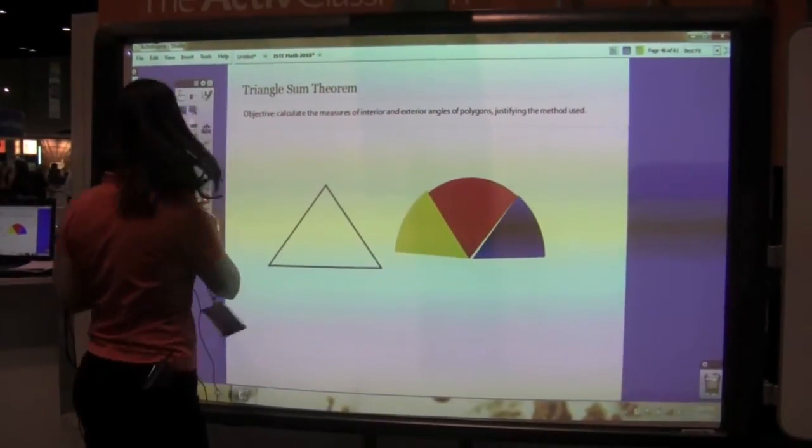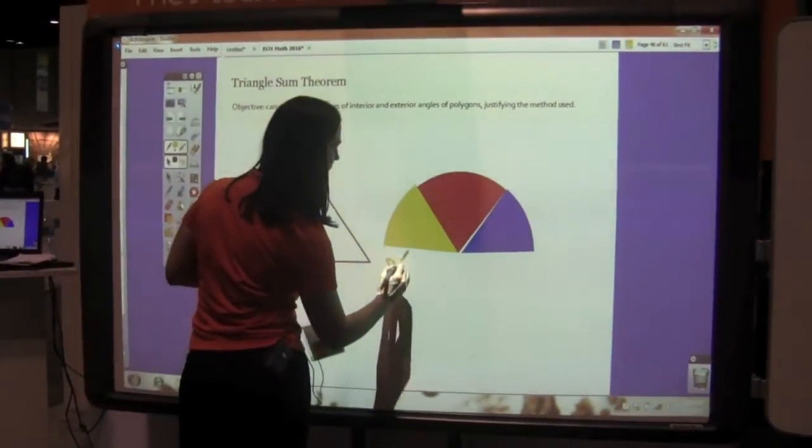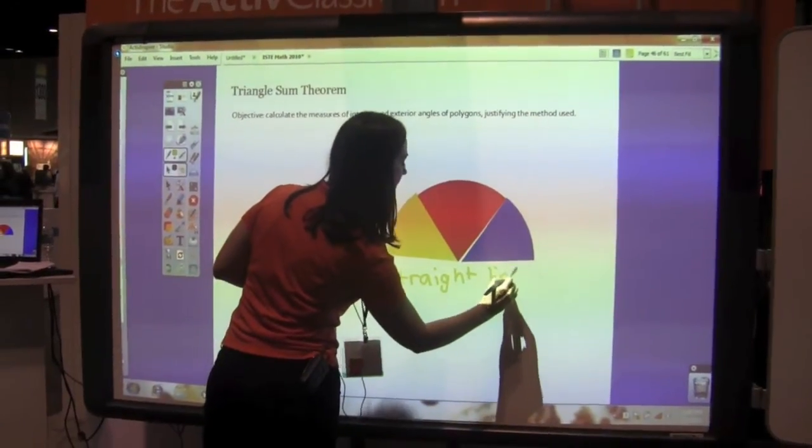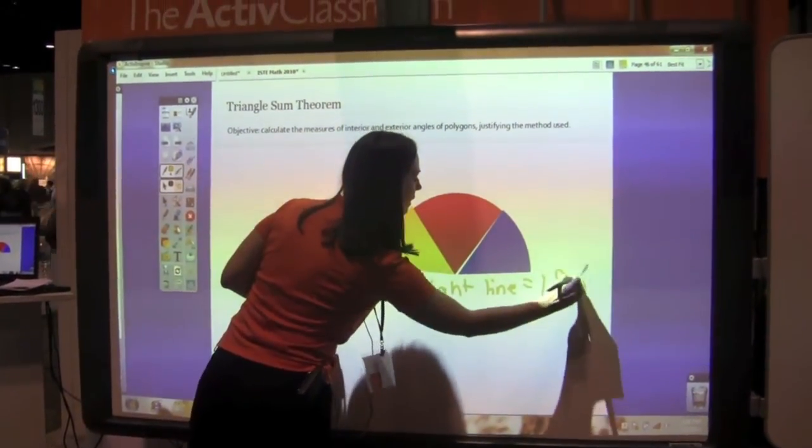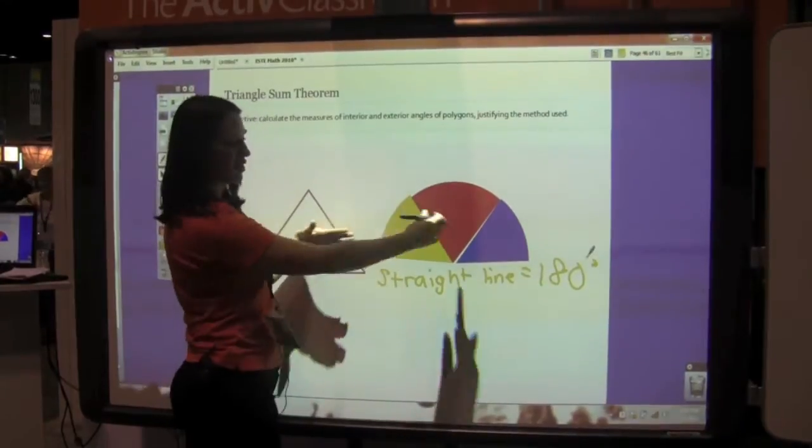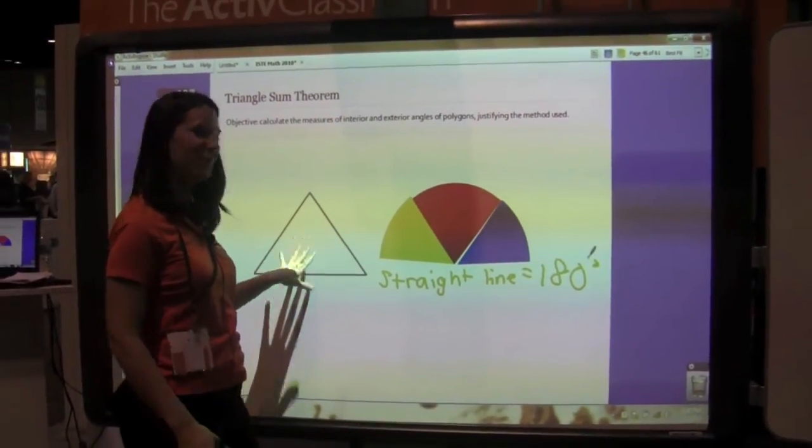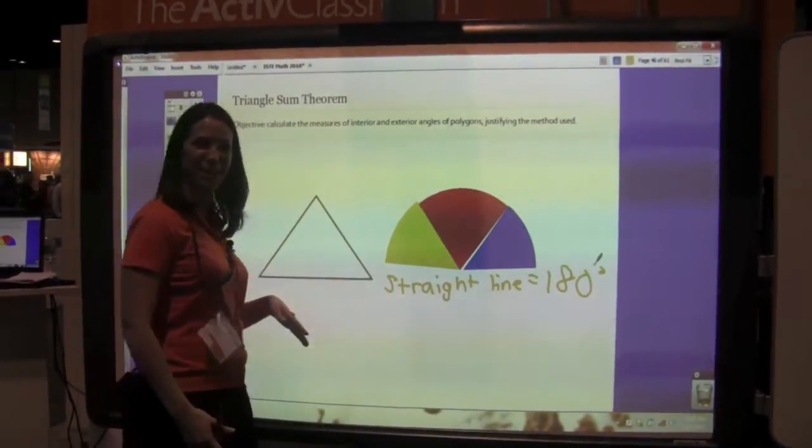And we already know that a straight line equals 180 degrees. And if I put those three angles together, I can see that it makes a straight line. So I'm proving that the interior angles of my triangle equals 180 degrees.